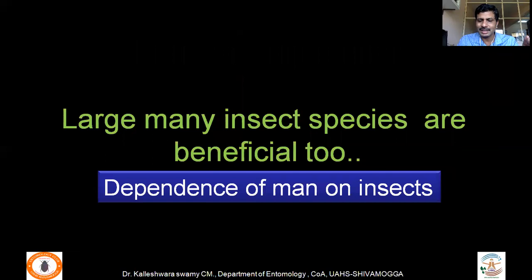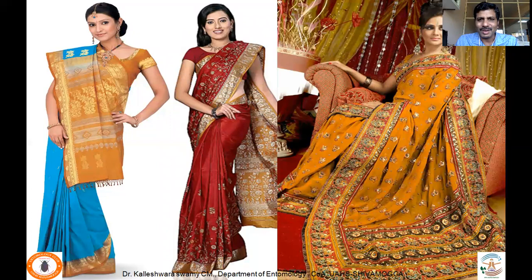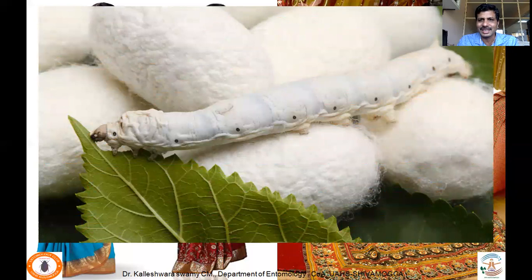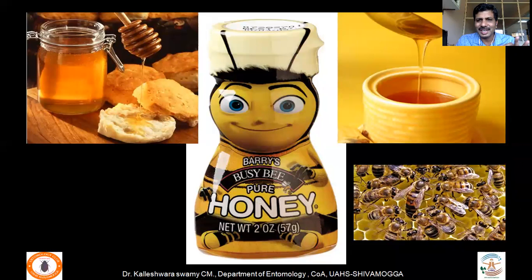More than one million species of insects are beneficial, and human dependency on them is very high. For example, in India there is no marriage function without silk saris, whose prices can range from one thousand to three lakh rupees depending on quality — and silk comes from the silkworm's cocoon. Similarly, honey is consumed by people of all ages and is a very important dietary component.